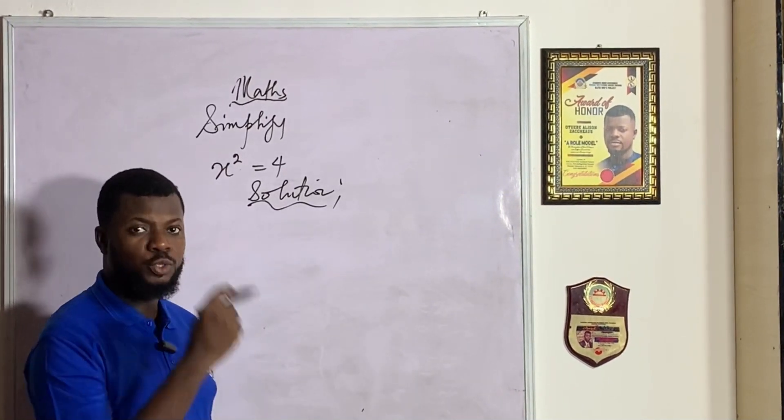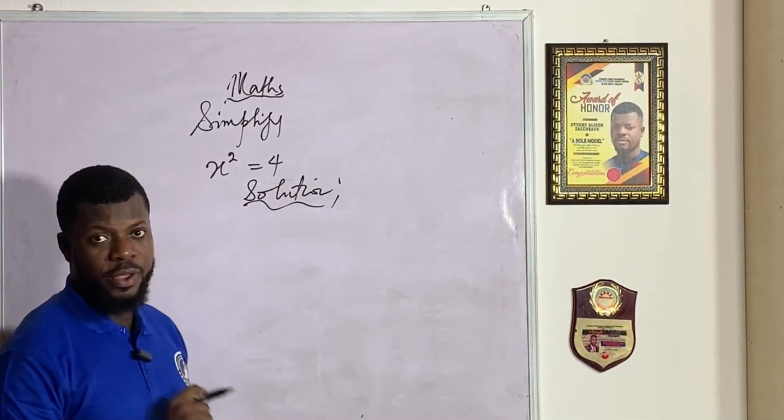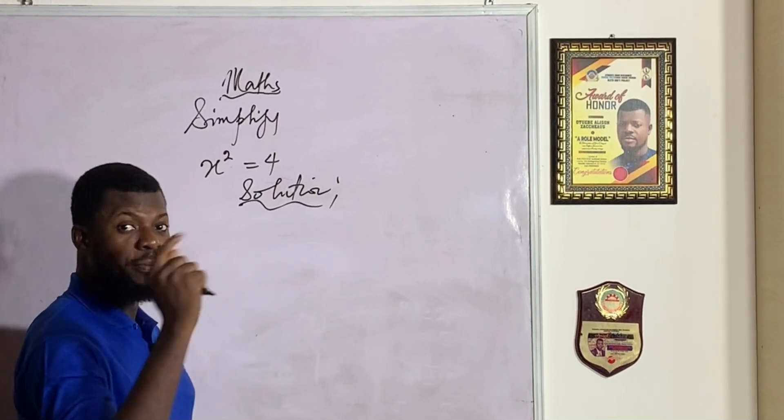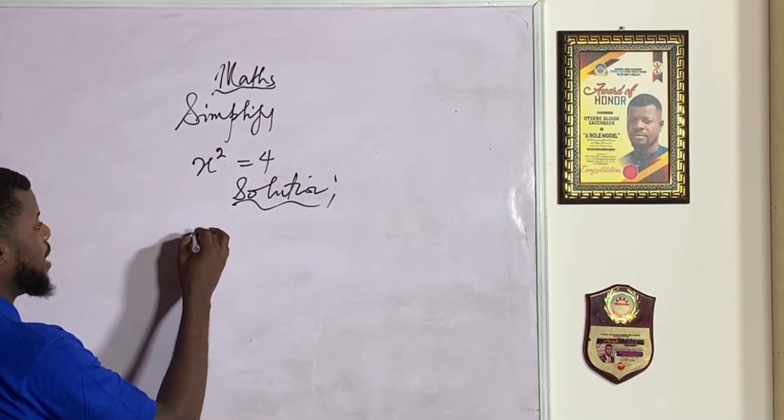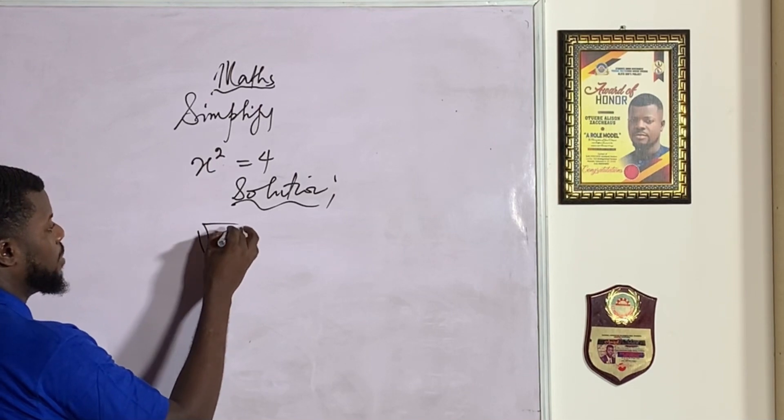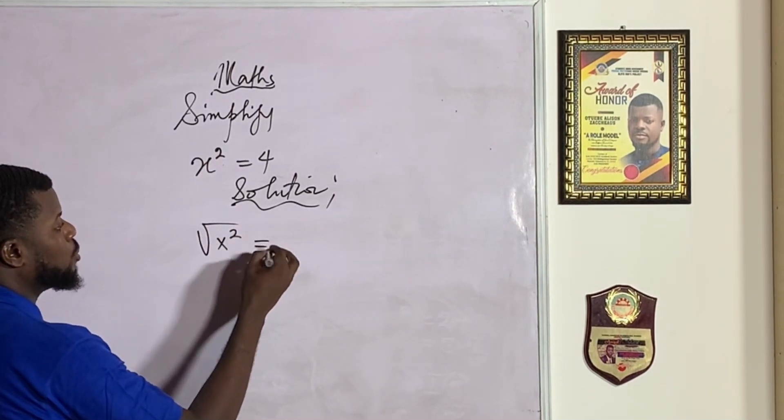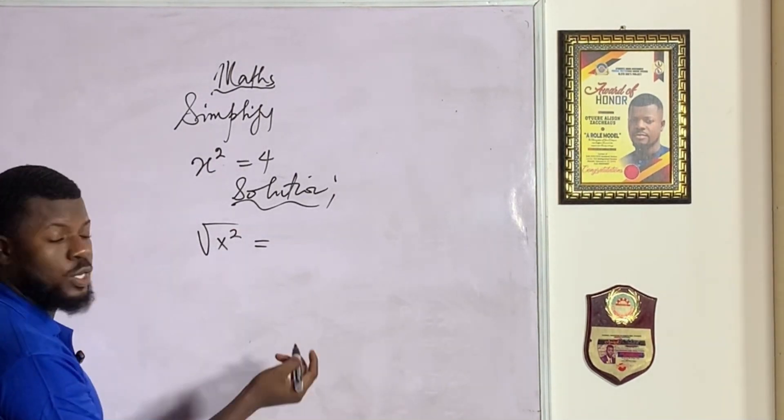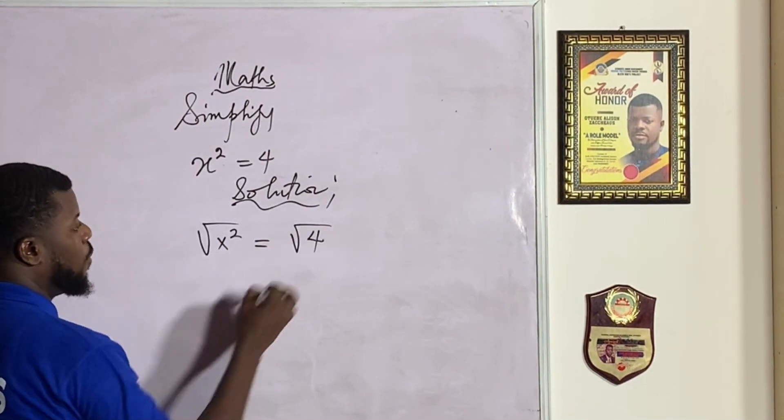The essence of that is to eliminate this square we have in there. So the only thing that can eliminate square is square root. So the best thing I could do here is to take the square root of x squared and also do the same thing to the right-hand side of the equation, which is the square root of 4.